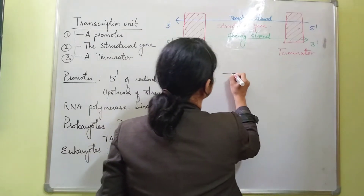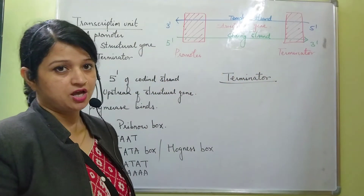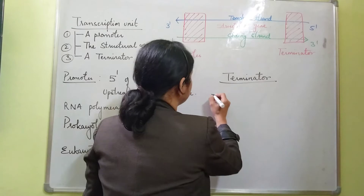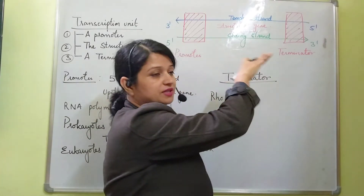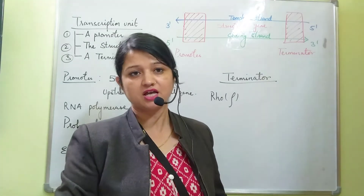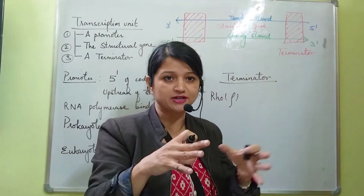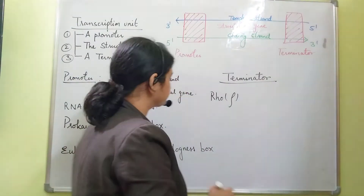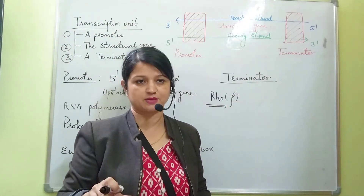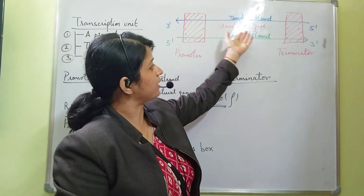Next is the terminator. The terminator is the site or region which will stop the process of transcription. When the RNA polymerase reaches the terminator, the rho factor will come and bind to the RNA polymerase and stop the process of transcription. The rho factor is a type of protein required for the termination of transcription. The area between the promoter and the terminator is known as the structural gene.